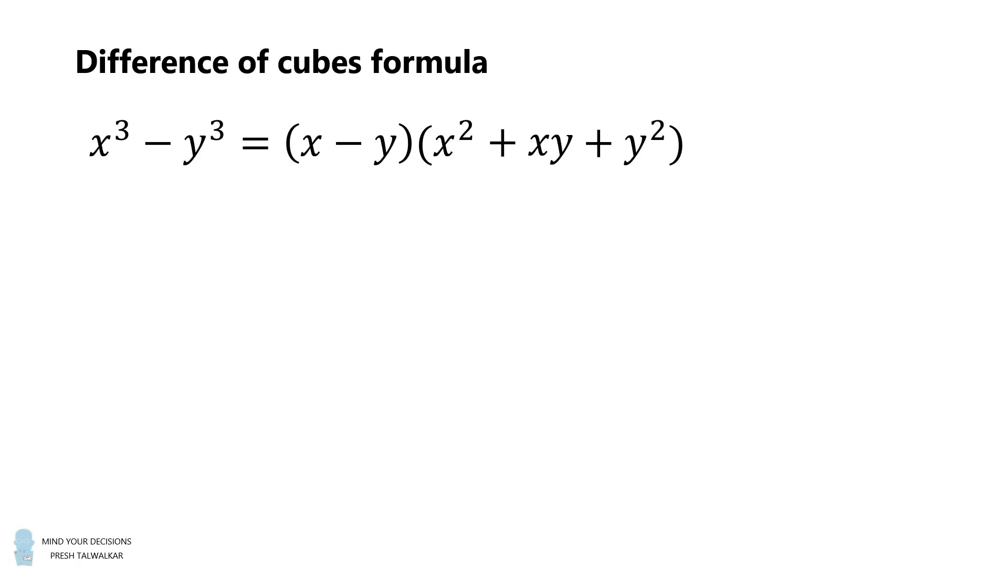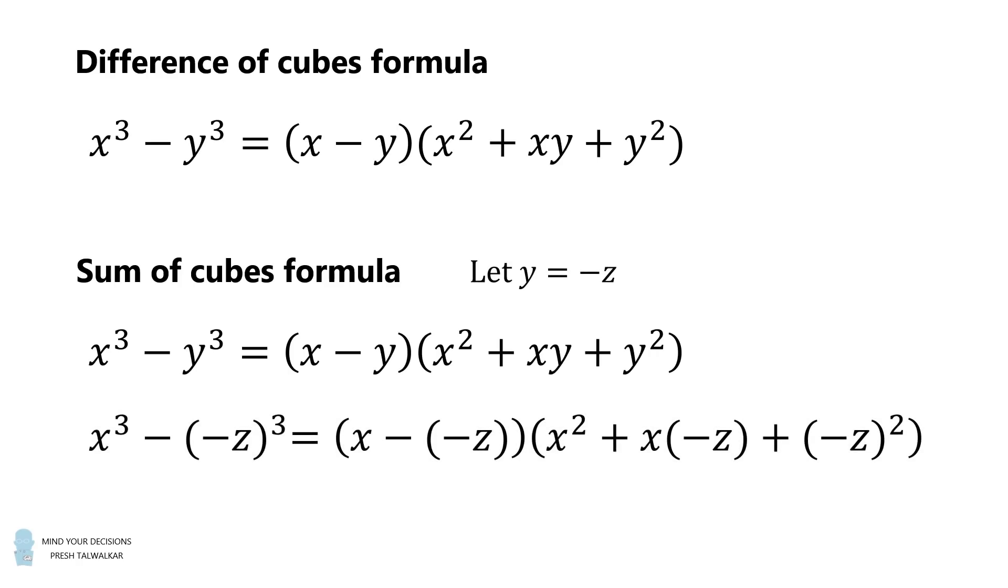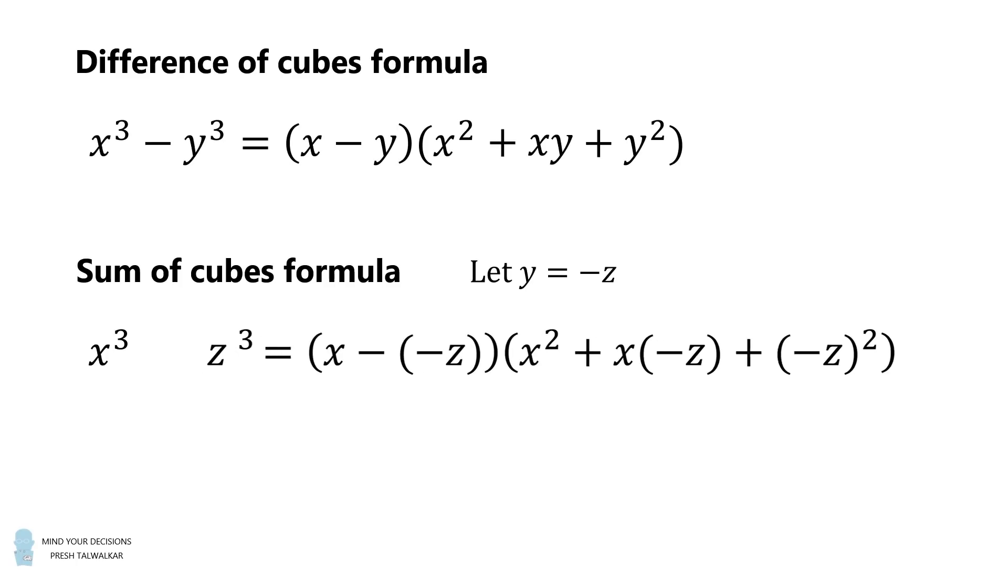For completeness, I'll mention we can also get the sum of cubes formula from this. We will make the substitution that y is equal to negative z. We substitute this in, and then we will carefully simplify. The result will be the sum of cubes formula. That x cubed plus z cubed is equal to the factor x plus z multiplied by the factor x squared minus xz plus z squared.